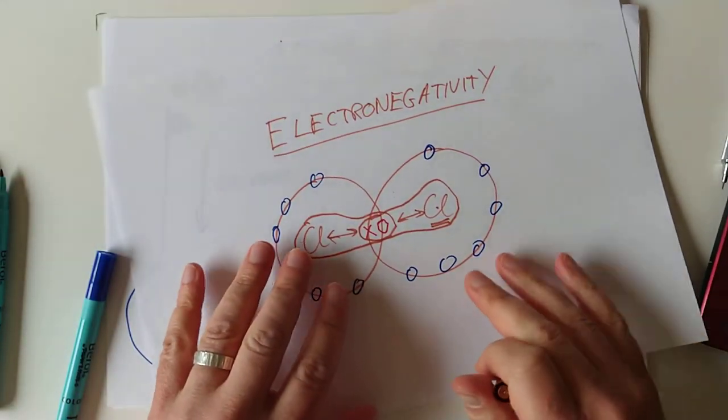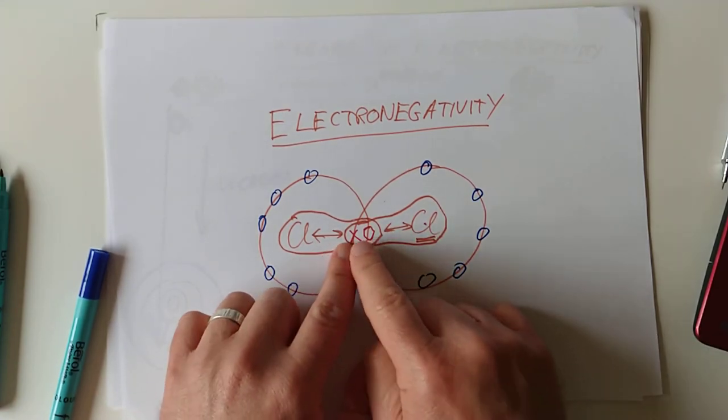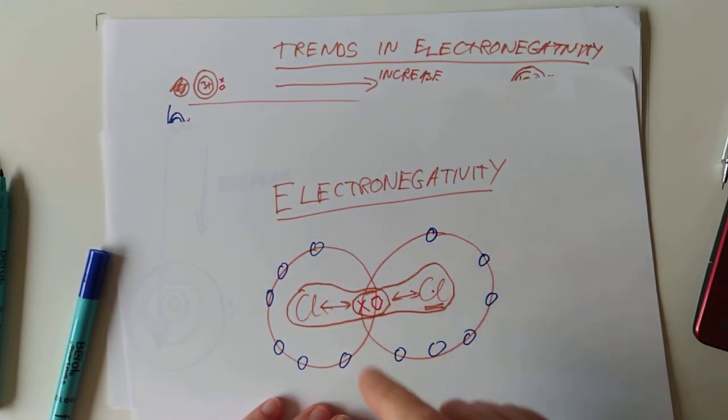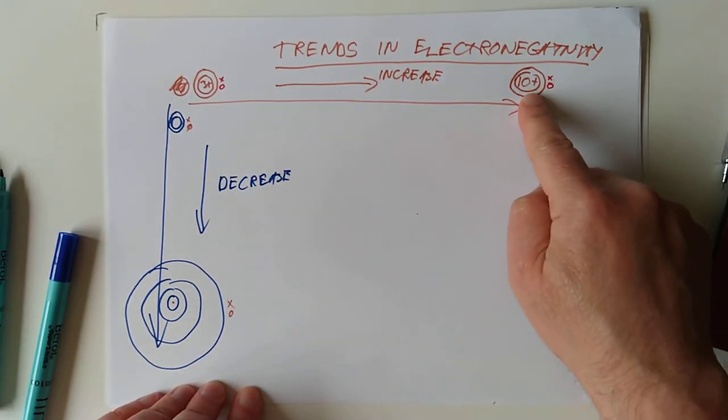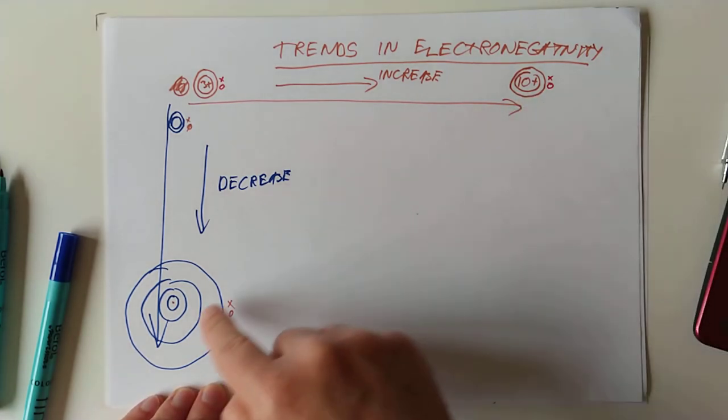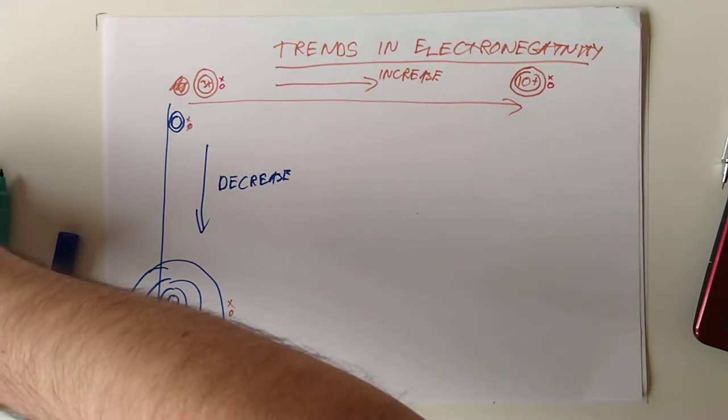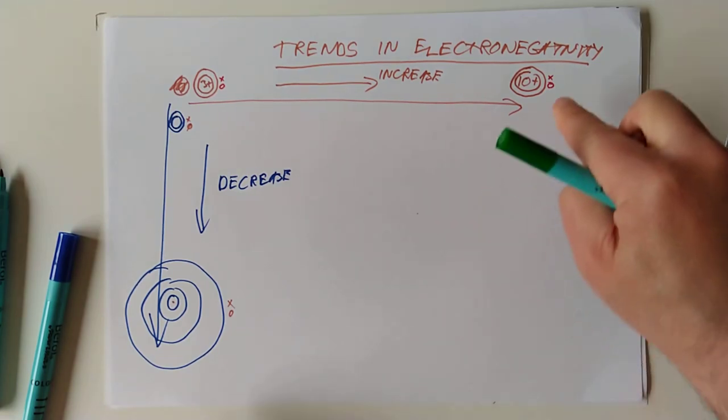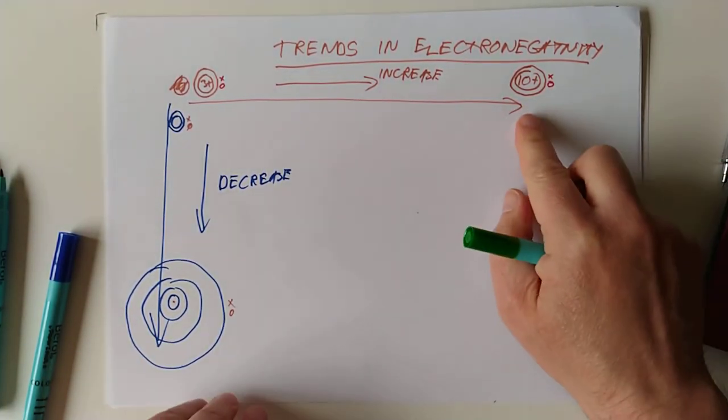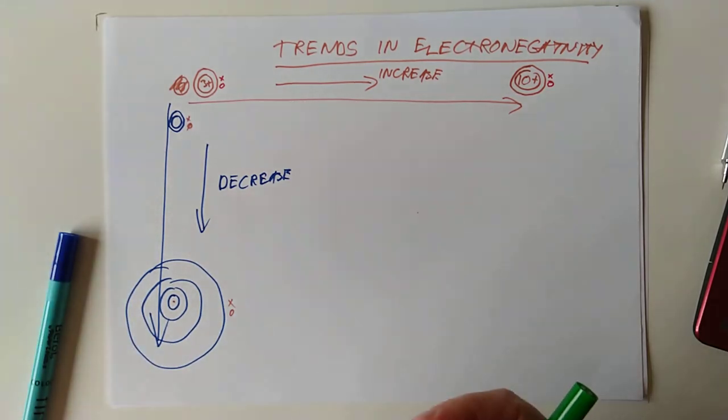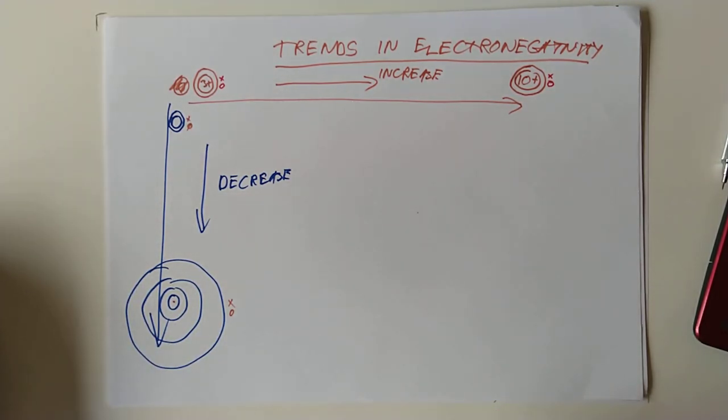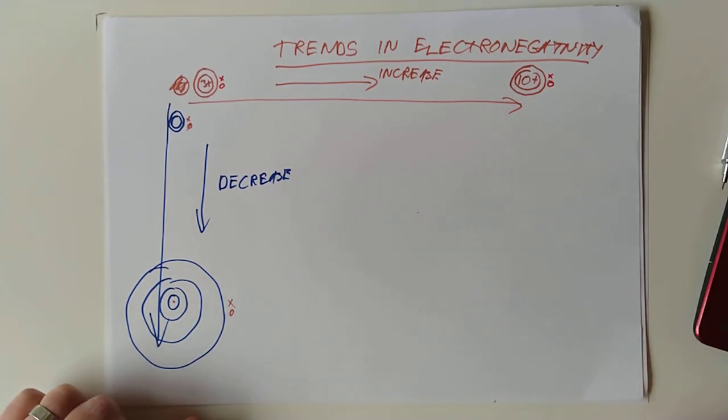So, electronegativity, what was it again? It was the pull that a particular element has on the shared pair of electrons. Only these ones. And you're required to know the trends in it. And these guys up here have the most pulling power in the entire table. And the guys down here, like myself, have the least. So, this is Chris Hemsworth. This is me. The element that's up here, by the way, with the most of one is fluorine. One of the reasons it makes it so dangerous is it's got an incredibly strong force of attraction on the shared pair of electrons and it makes a very, very strong bond. That's all I want to say on these three videos. Thank you for listening.